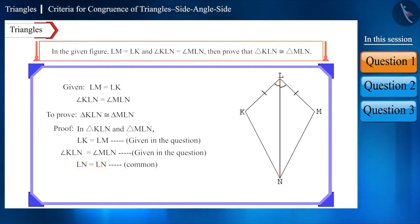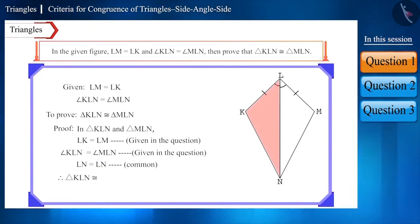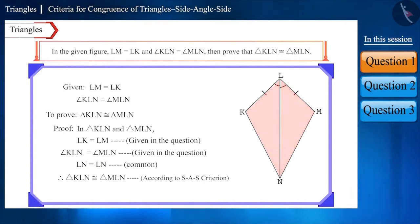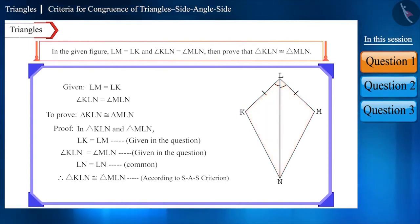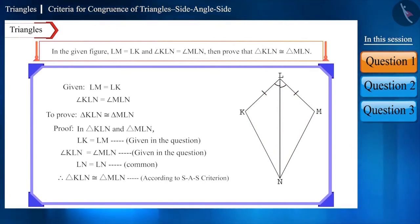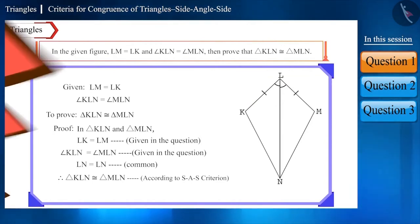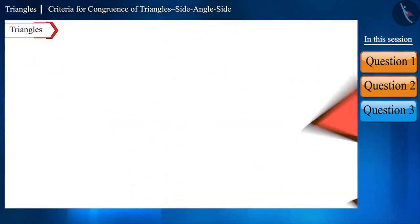We can write it like this also. Therefore, triangle KLN is congruent to triangle MLN. And friends, while writing congruent triangles, write their names in the same order in which their sides and angles have one-to-one correspondence, or in the order in which they are congruent to each other. Let's move to the next question.